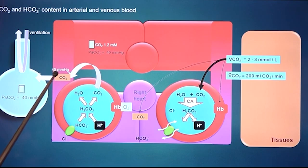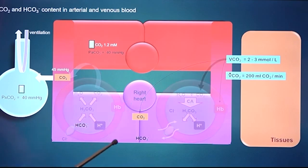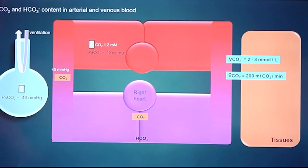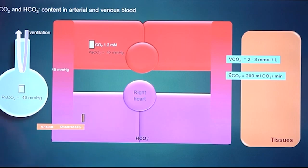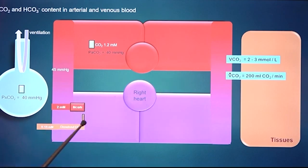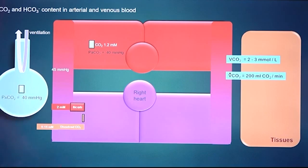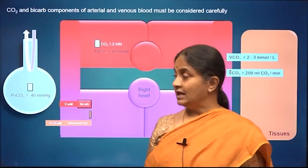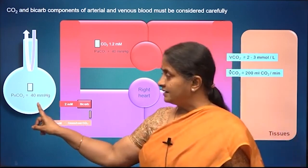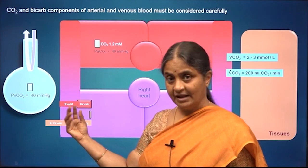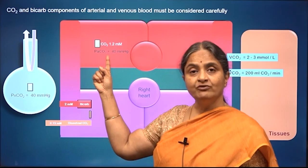Dissolved CO2 in venous blood is 0.15 millimoles per litre from tissue carbon dioxide, and the bicarbonate is about 2 millimoles per litre. These are interchangeable in the pulmonary capillary — the bicarbonate reforms carbon dioxide and is eliminated in the lung. The question is: if carbon dioxide is a waste product, why does the lung not remove all of it? Why does it allow some CO2 to remain in arterial blood?